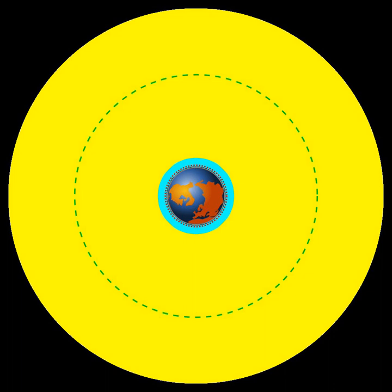Heliocentric orbit, an orbit around the Sun. In the solar system, all planets, comets, and asteroids are in such orbits, as are many artificial satellites and pieces of space debris.